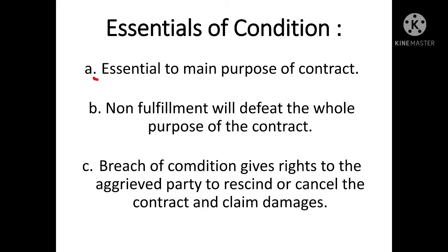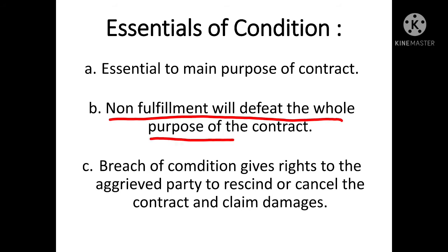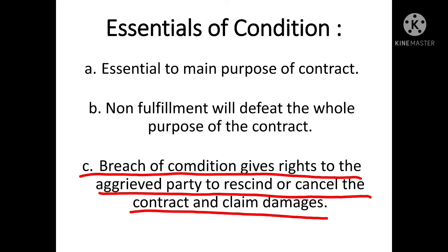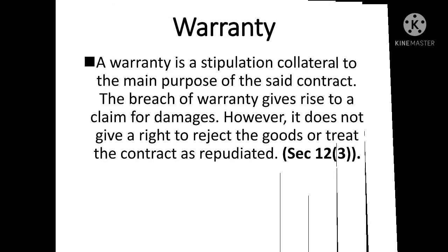Condition के essentials: पहला - it is essential to the main purpose of the contract। अगर condition fulfill नहीं करी तो non-fulfillment will defeat the whole purpose of the contract। जैसे Sohan को 50 km per hour वाला horse चाहिए था, 30 km per hour वाला दिया तो पूरा purpose defeat हो गया। दूसरा - breach of condition gives rights to the aggrieved party to rescind or cancel the contract and claim damages।